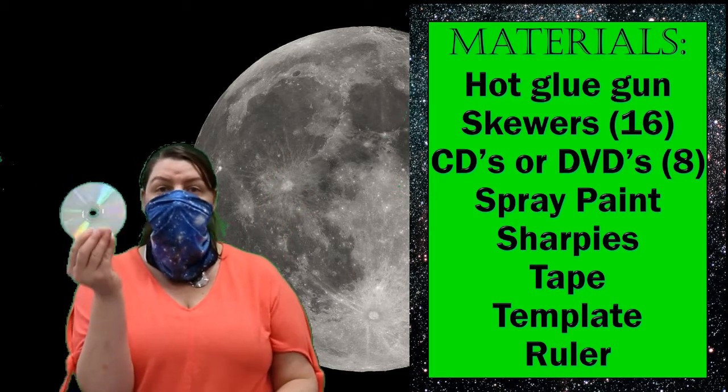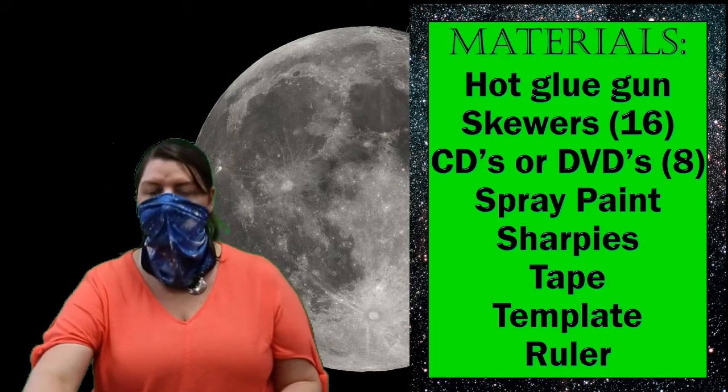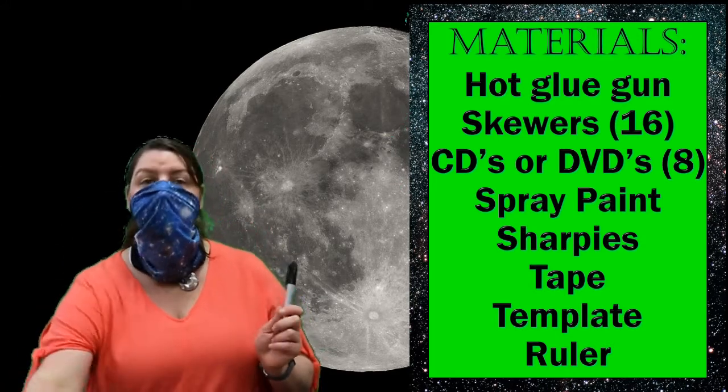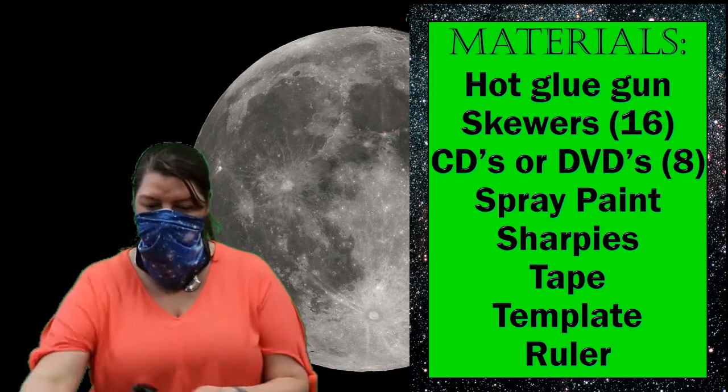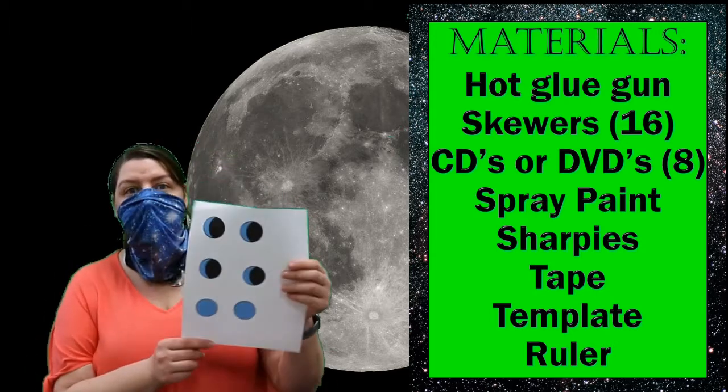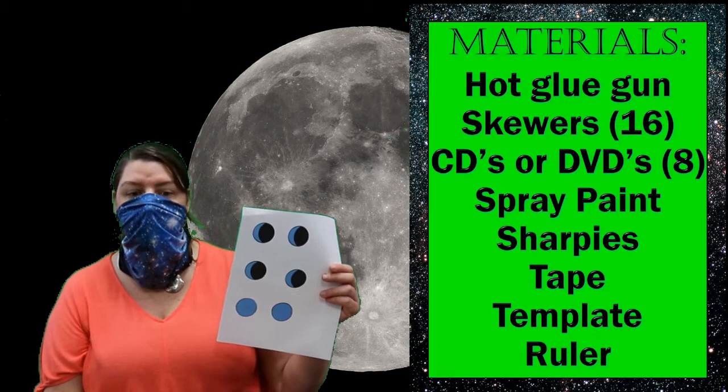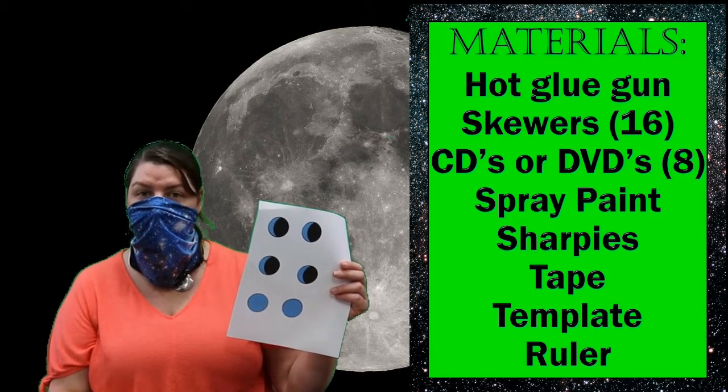You'll also need old CDs or DVDs that you can cut up, either a sharpie or black spray paint, some tape, and a template to help you spray paint the different phases of the moon onto the circles that you cut out of your CDs.